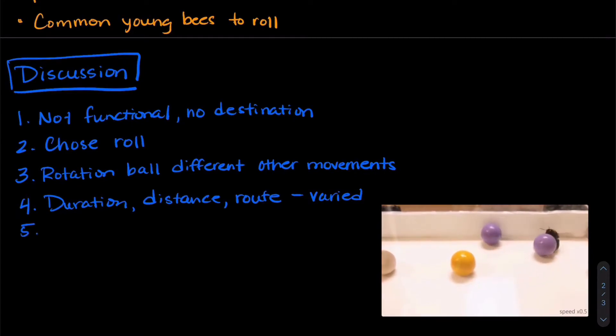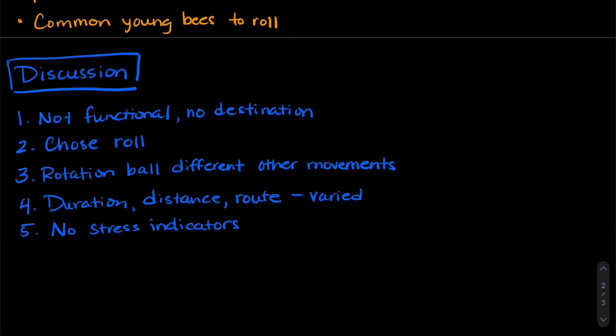The researchers also did not find any stress indicators from the bees. So looking at the evidence for these five rules of play, the researchers decided that it was enough evidence to suggest that bees in fact do play.